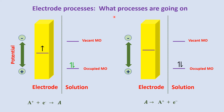Regarding electrode processes — what processes are going on at the surface of the electrode — the main role is the control of potential. By controlling the potential of the working electrode, we can control the energy of electrons present at the electrode surface. By driving the electrode to a more negative potential, the energy of electrons is raised. They can reach a level high enough to transfer into the vacant electronic states on the species in the electrolyte, and the flow of electrons from the electrode to the solution takes place, resulting in a reduction current.